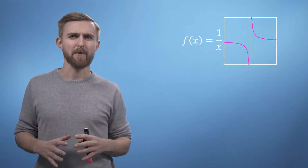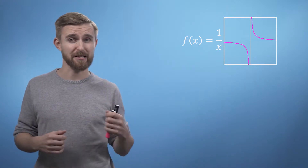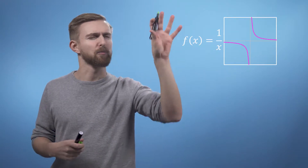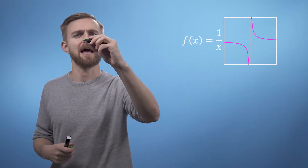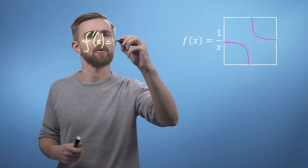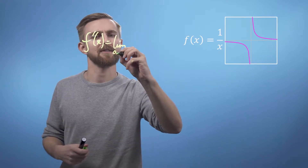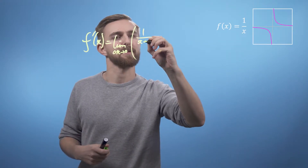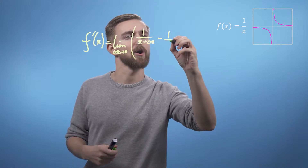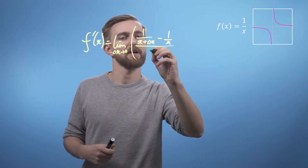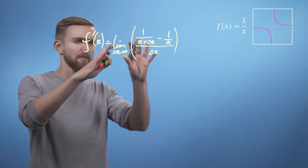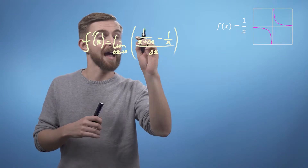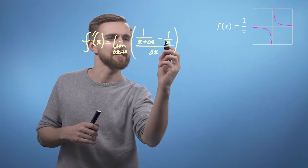But what about the gradient? Well let's substitute our function into the differentiation expression to investigate. So if we take f of x equals 1 over x, we can say that f dash of x must equal the limit as delta x goes to 0 of 1 over x plus delta x minus 1 over x, all divided by delta x. We're going to have to make the numerator have a single fraction, combining these two fractions by making the denominators the same.